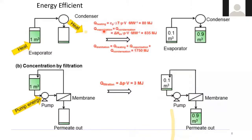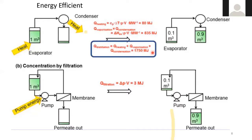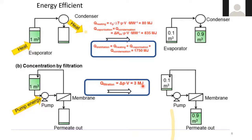Perhaps the most advertised advantage is that membrane operation is environmentally friendly, meaning it needs less energy than conventional separation processes like distillation. Distilling one liter of water requires 1750 megajoules, whereas the same separation through a membrane with just a pump and pressure requires only 3 megajoules — a huge difference, which is why we say membrane operation is energy-friendly.